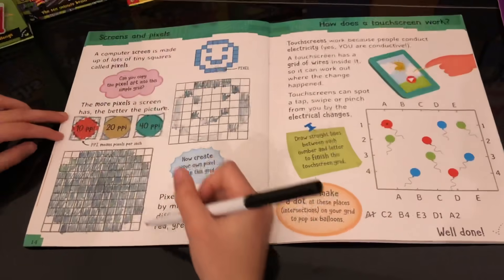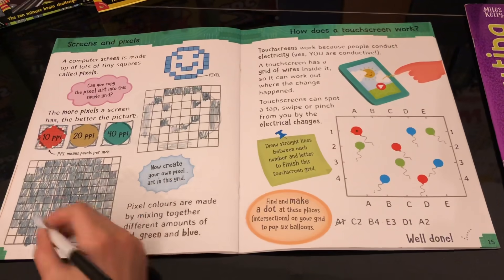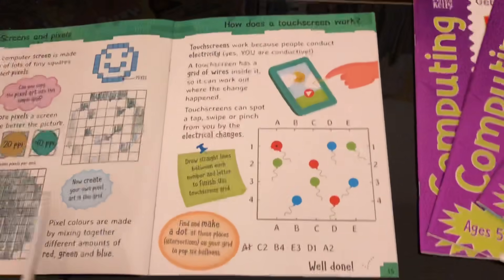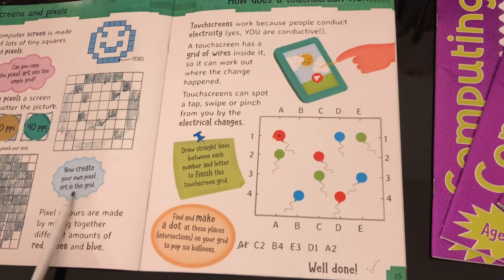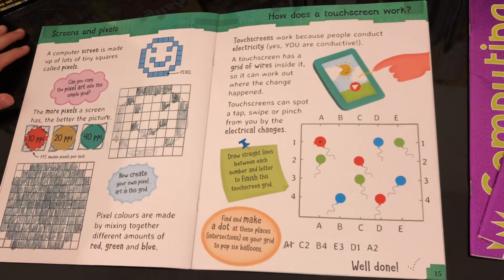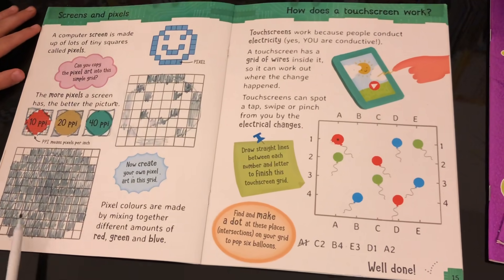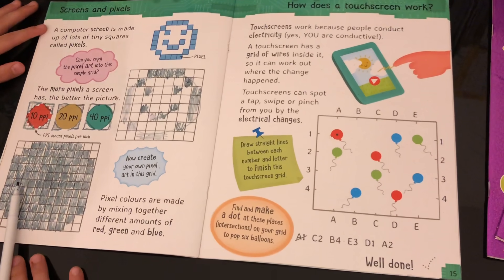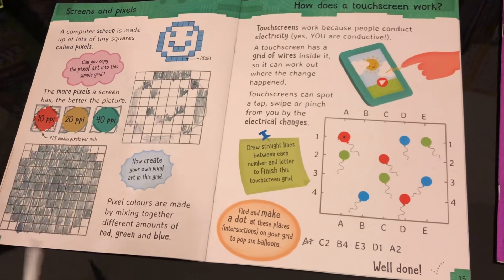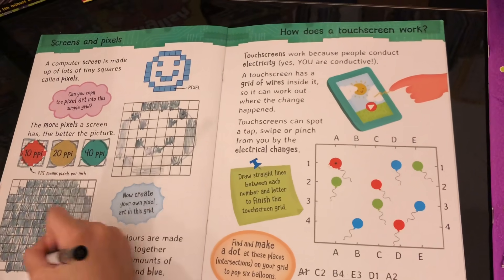We've left three, then five — that's a big circle, about 11 PPI. Now create your own pixel art in this grid. We made a circle, and that's fine — you can do whatever you want. I chose a circle because it comes together nicely. We started small and then gradually built up to a big one.